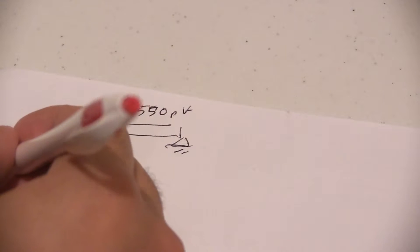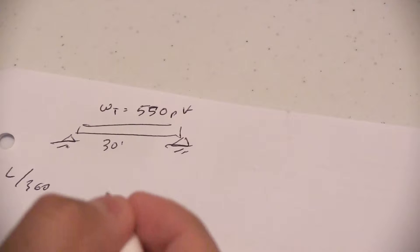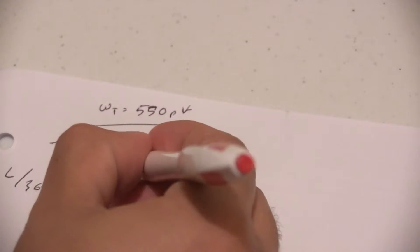First we have to check our deflection criteria. In this case let's use L over 360, so we're going to do 30 feet times 12 to convert it into inches.